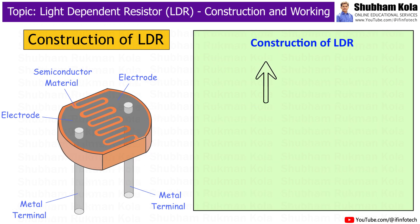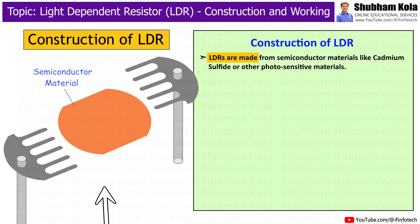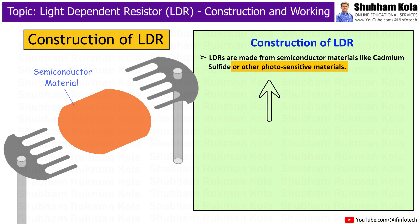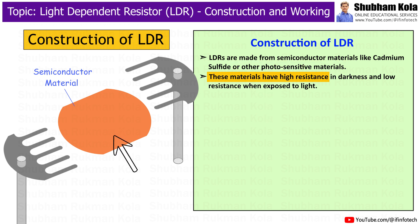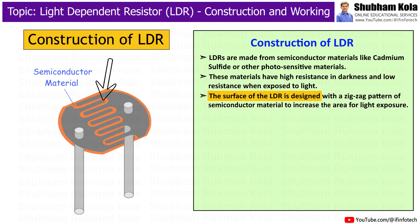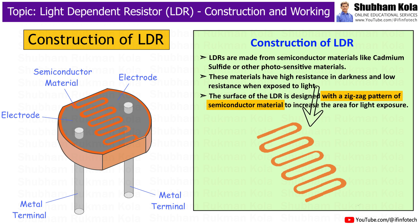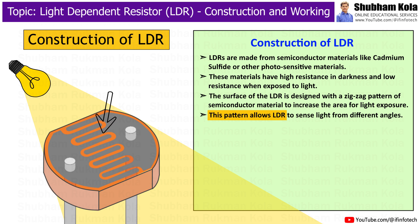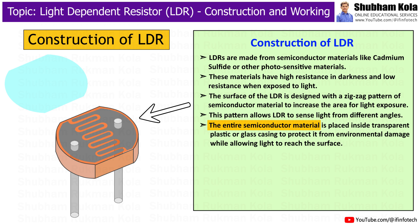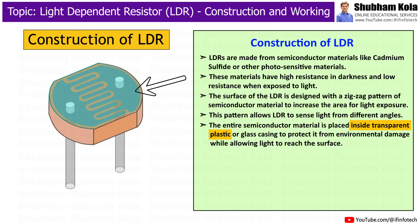Now let's talk about how the LDR is constructed. LDRs are made from semiconductor materials like Cadmium Sulphide or other photosensitive materials. These materials have higher resistance in darkness and low resistance when exposed to light. The surface of the LDR is designed with a zigzag pattern of semiconductor material to increase the area of light exposure, allowing the LDR to sense light from different angles. The entire semiconductor material is placed inside a transparent plastic or glass casing to protect it from environmental damage while allowing light to reach the surface.